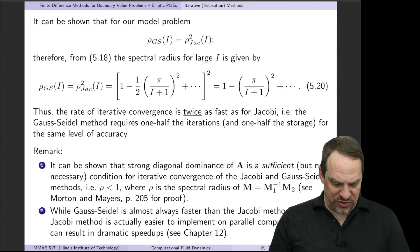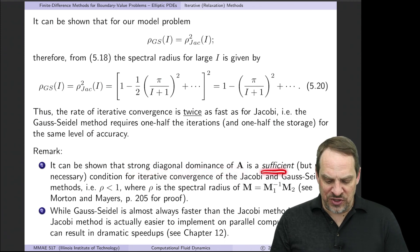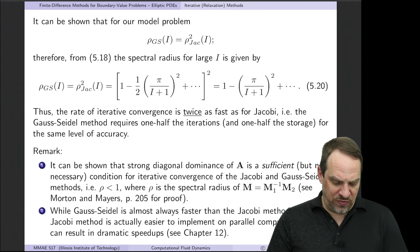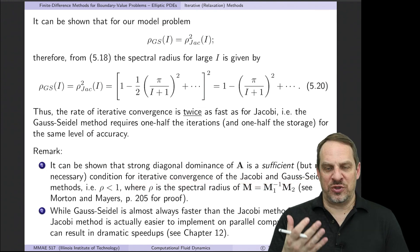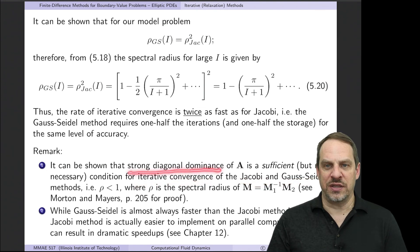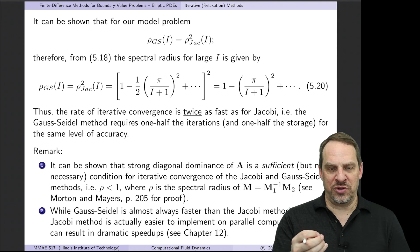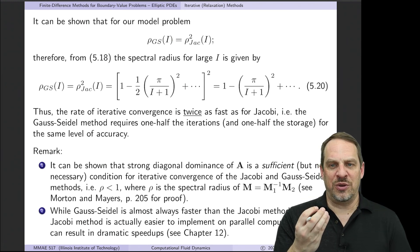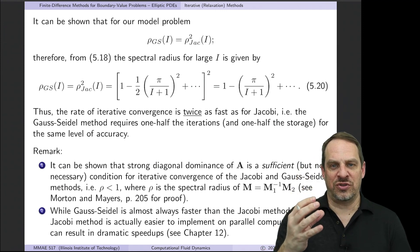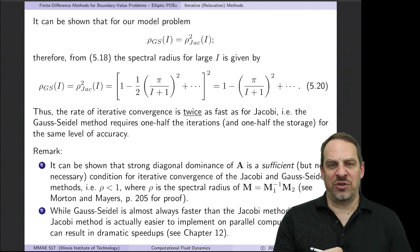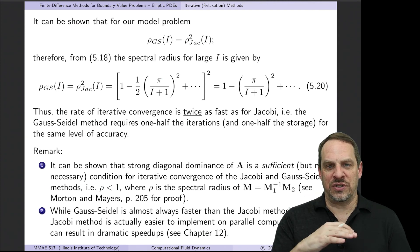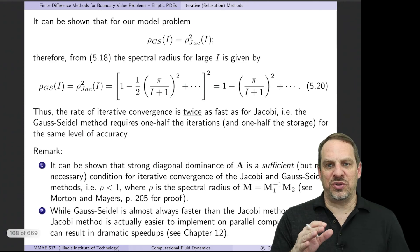Strong diagonal dominance of matrix A is a sufficient condition (though not necessary) for iterative convergence using both Jacobi and Gauss-Seidel — the spectral radius will always be less than 1 if A is strongly diagonally dominant. If A is not diagonally dominant, it may still converge but we can't prove it either way. Finally, on a single core, Gauss-Seidel is clearly the winner over Jacobi. However, on parallel computing architectures there may actually be some advantages to implementing Jacobi — something to be discussed in a later video.